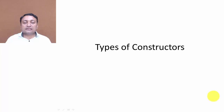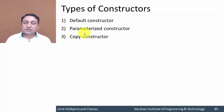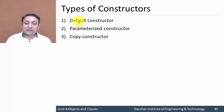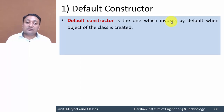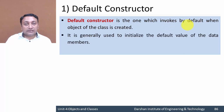In this lecture we are going to discuss types of constructors. There are three types: default, parameterized, and copy constructor. The constructor we discussed in our previous video is the default constructor, which is invoked by default when you create any object, and it is used to initialize the default values of data members.